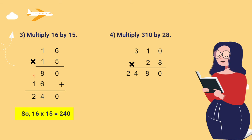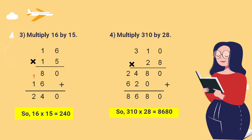Then 2 times 0 equals 0, 2 times 1 equals 2, 2 times 3 equals 6. Then add the partial products: 0 plus 0, 8 plus 0 equals 8, 4 plus 2 equals 6, 2 plus 6 equals 8. So 310 times 28 equals 8,680.